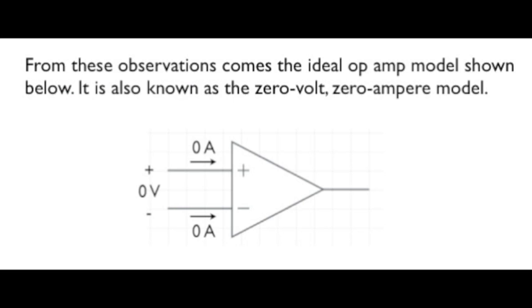And it's from these two observations that the ideal op-amp model arises. The input current, though not identically equal to 0, is small enough to be neglected in Kirchhoff's current law. And the input voltage, though not identically 0, is small enough to be neglected in Kirchhoff's voltage laws.